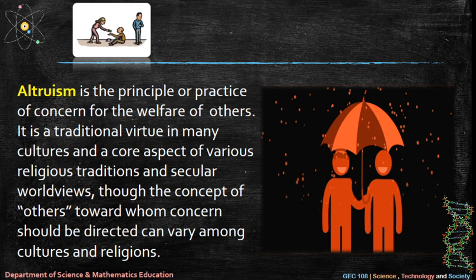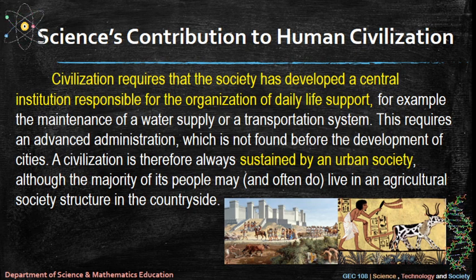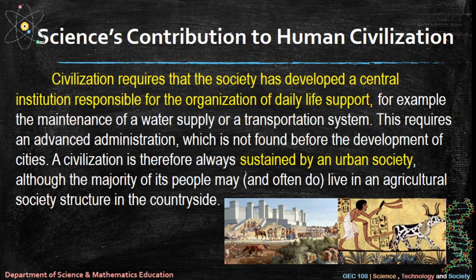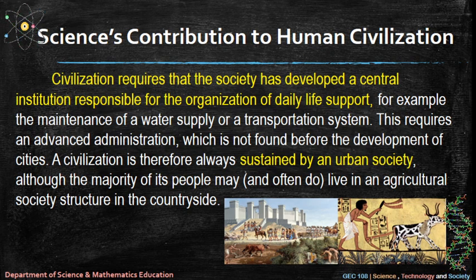Science's contribution to human civilization: civilization requires that a society has developed a central institution responsible for the organization of daily life support — for example, the maintenance of a water supply or a transportation system. This requires an advanced administration not found before the development of cities. A civilization is therefore always sustained by an urban society, although the majority of its people may live in an agricultural society structure in the countryside.